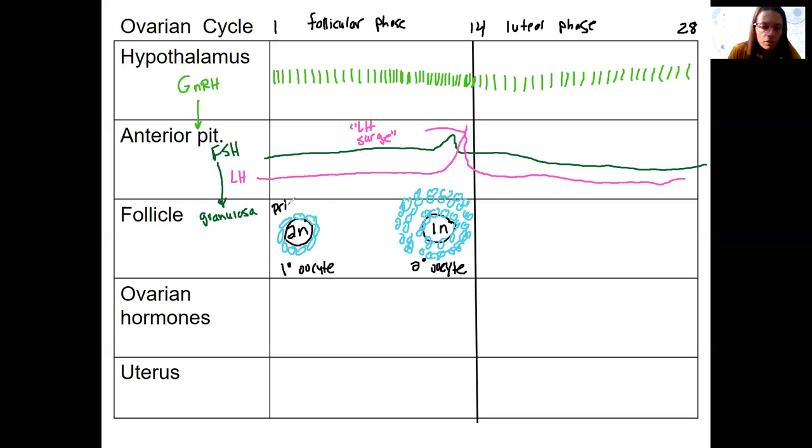So here is our primordial follicle with pretty much just the granulosa cells. Here is our mature follicle. That's over 14 days. There's obviously several changes that occur in between there to get there. Here is that antrum. It's that fluid-filled space that's going to cause pressure and eventually cause this thing to burst. I'm also just going to add in our theca cells that are around the outside. These are stimulated by LH. These are our granulosa cells in blue.